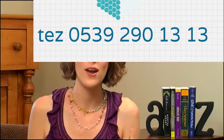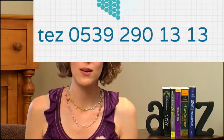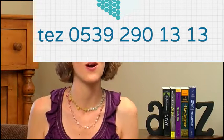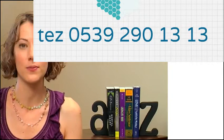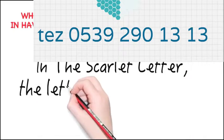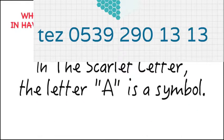Step 1. Assuming you've read the book — and really, you can't write a paper without having read the book — answer the question off the top of your head. What role does the Scarlet Letter A play in Hawthorne's novel, and why is it important? Preliminary thesis: In the Scarlet Letter, the letter A is a symbol.